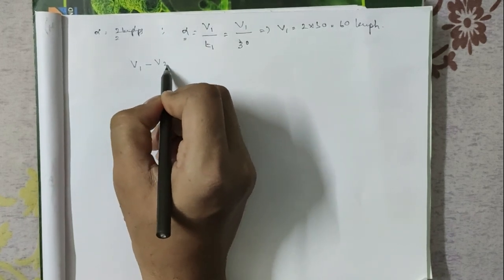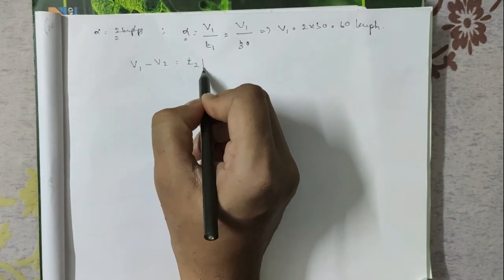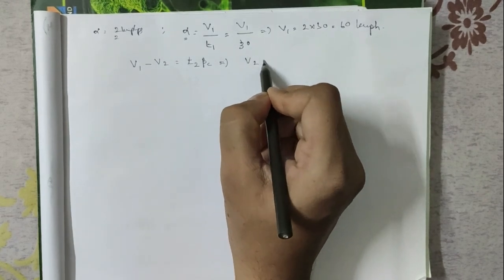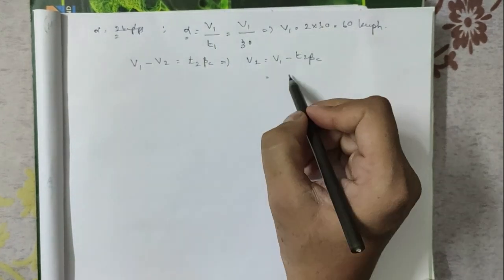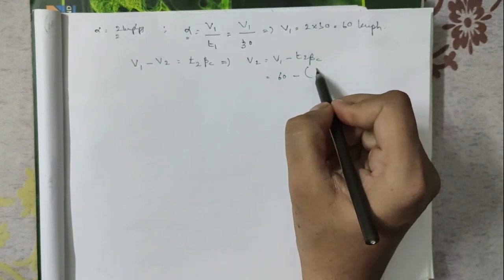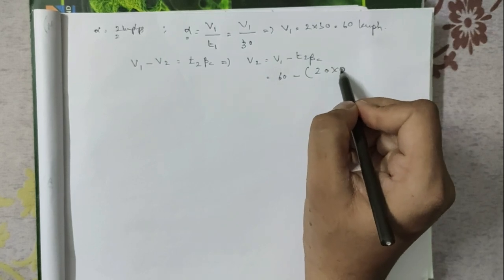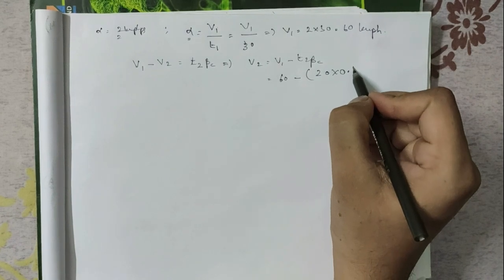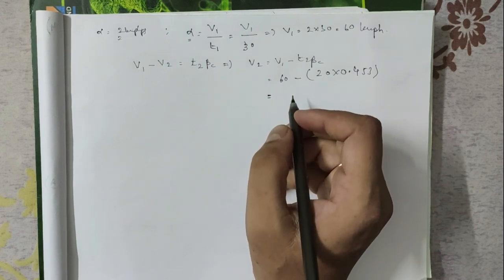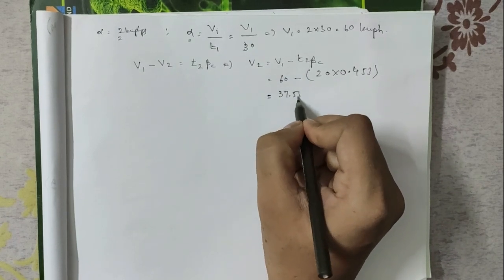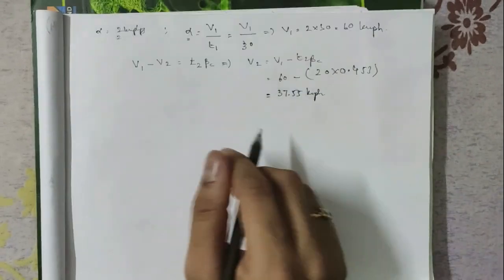Using the coasting relationship: V1 − V2 = T2 × β_c. Therefore V2 = V1 − T2 × β_c = 60 − (50 × 0.453) = 60 − 22.65 = 37.55 kmph. So V1 = 60 kmph and V2 = 37.55 kmph.